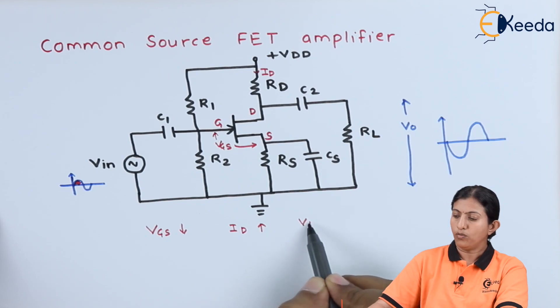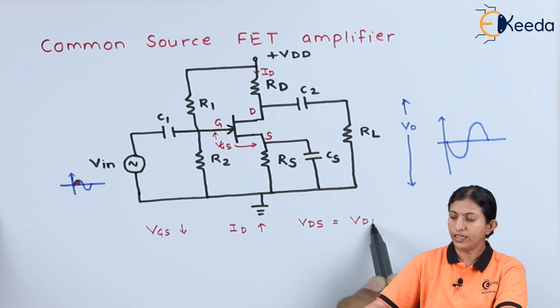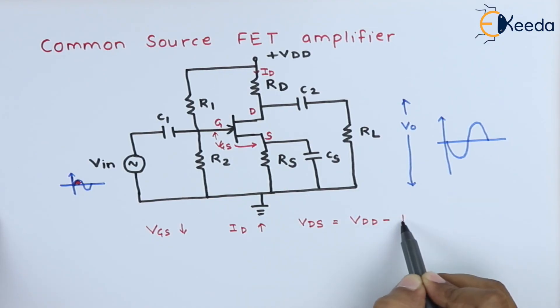The output voltage is given as VDS equals VDD minus ID times (RS plus Rd).